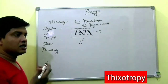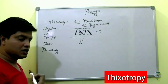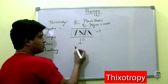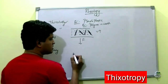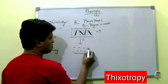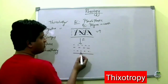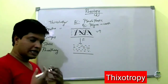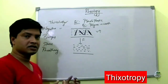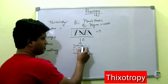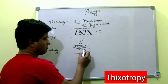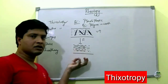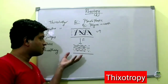The other name for pseudoplastic system is shear-thinning system — if you apply shear, it becomes thin. When you apply shear stress, the swollen polymer leaves the water, gets dehydrated, and aligns in the direction of flow. Due to this, there is no much resistance built up within the system and the system becomes thin.